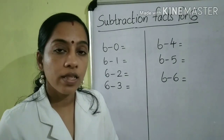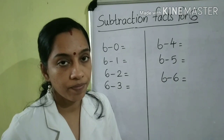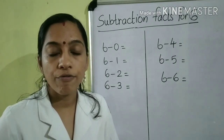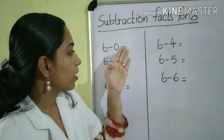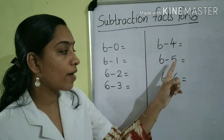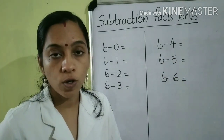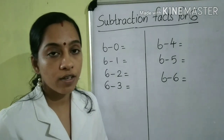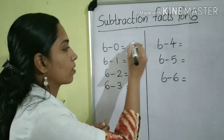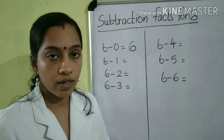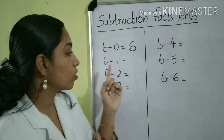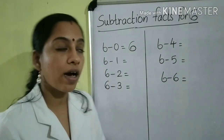Next, we will learn the subtraction facts for 6. For finding the subtraction facts for 6, we have to subtract some numbers from 6 — that is, 0, 1, 2, 3, 4, 5 and 6. First, we are going to subtract 0 from 6. 6 minus 0 is 6. Next, 6 minus 1 — subtracting 1 from a number gives the number before, so 6 minus 1 is equal to 5.